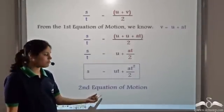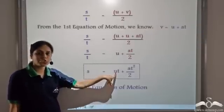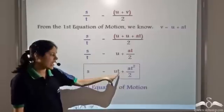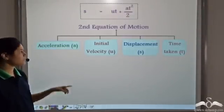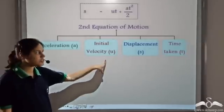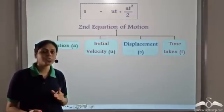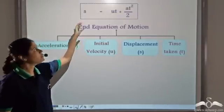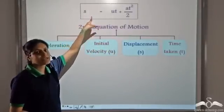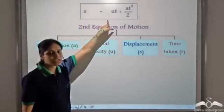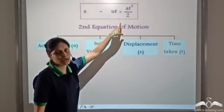The second equation of motion represents s, that is displacement, in terms of initial velocity, acceleration and time taken. Given any three of these terms, we can find the fourth one using the second equation of motion. This says displacement is equal to initial velocity into time taken plus acceleration into time squared by two.